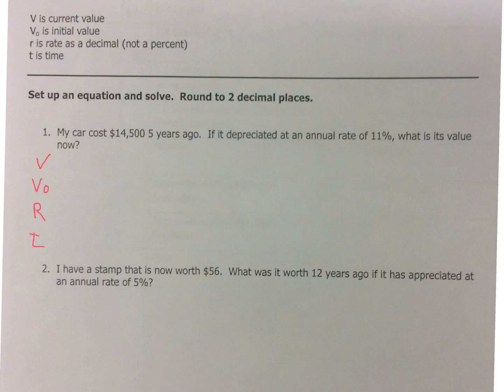My car cost me $14,500 five years ago. So this is not the current price. This is an older price. So that's the original, $14,500. Five years ago, that is my time. Five years. Now, it depreciates at an annual rate of 11%. 11%. But this is going to go into my formula as a decimal. So 11 divided by 100 is 0.11. And I'm looking for the newer value of the vehicle.